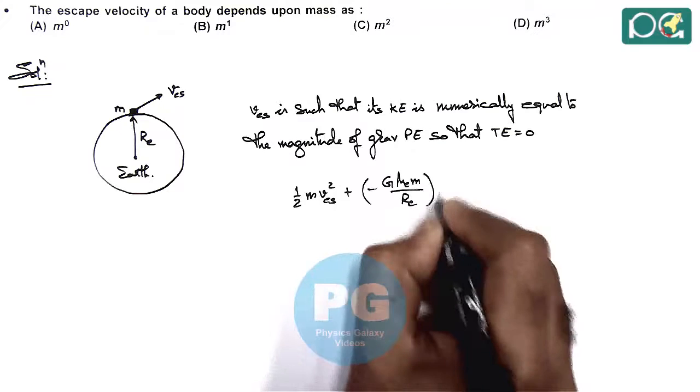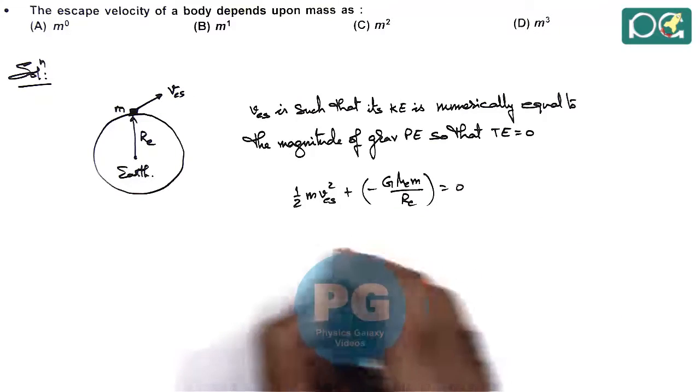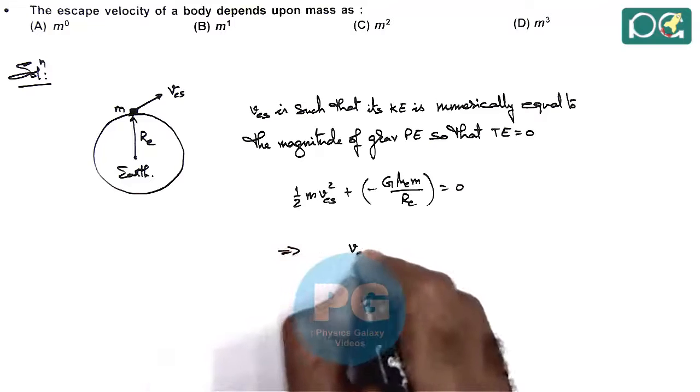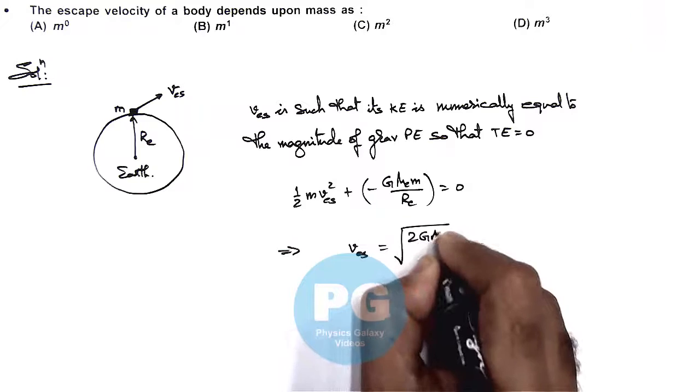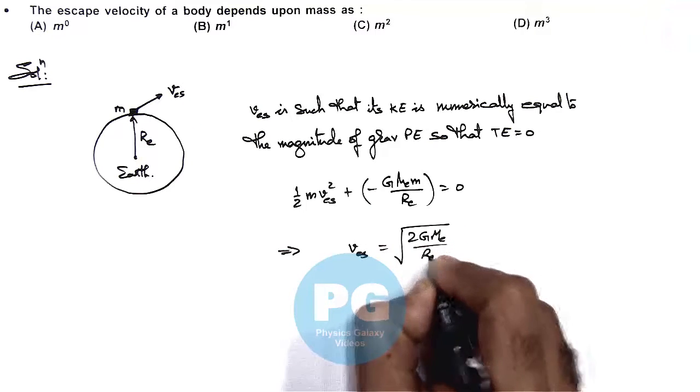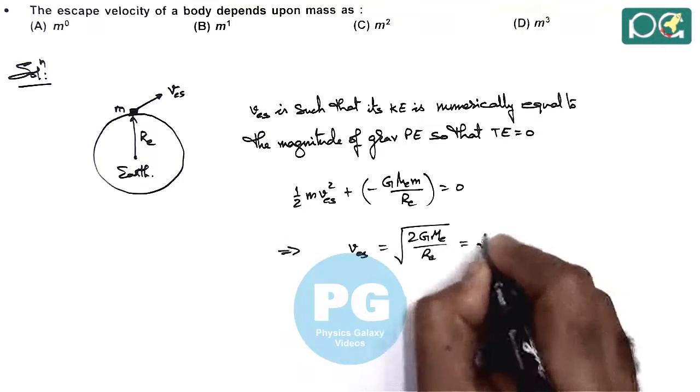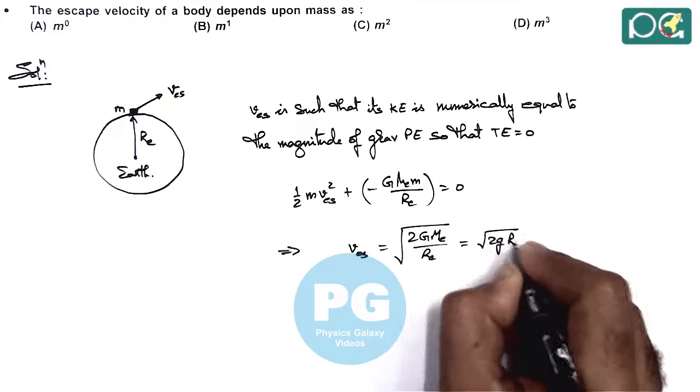So in this case we are getting v_escape equals the square root of 2GME/RE, which can be written as the square root of 2gR.